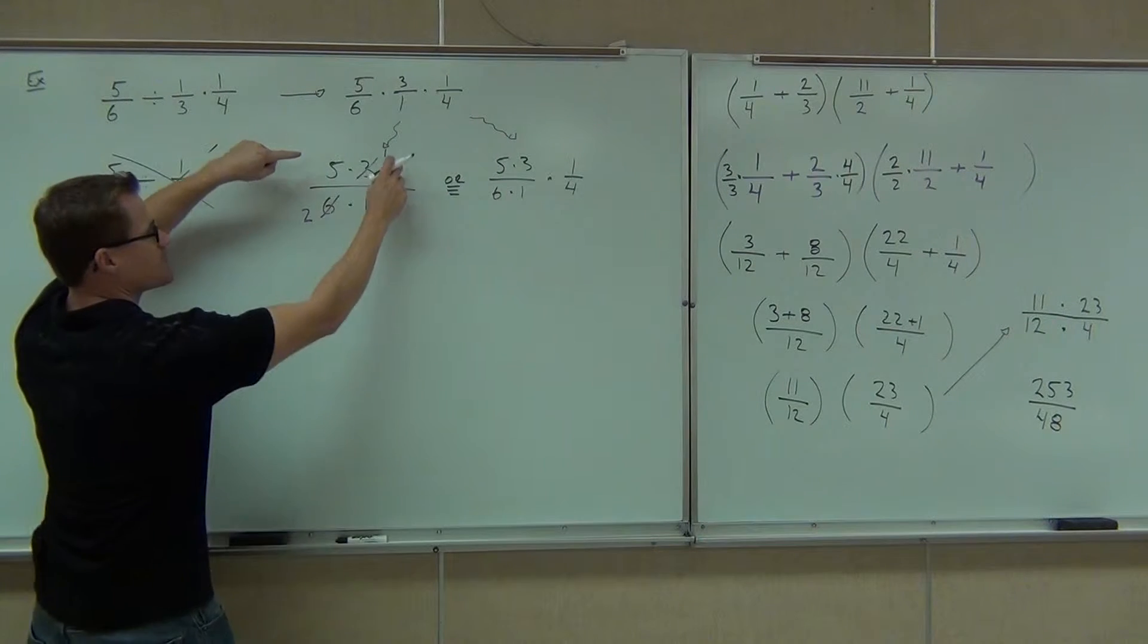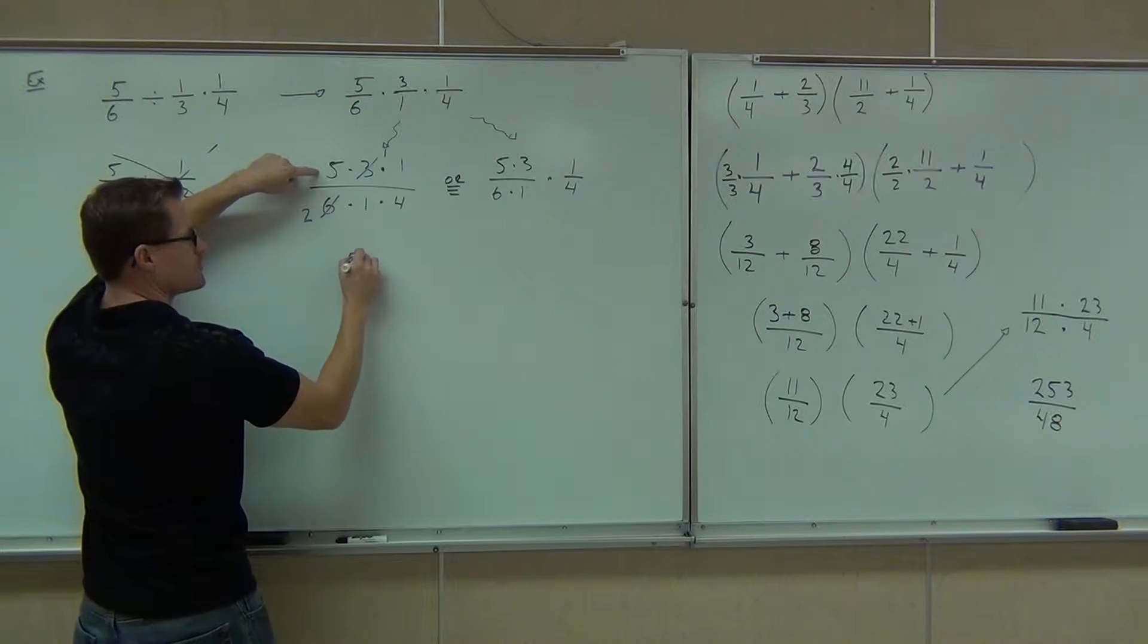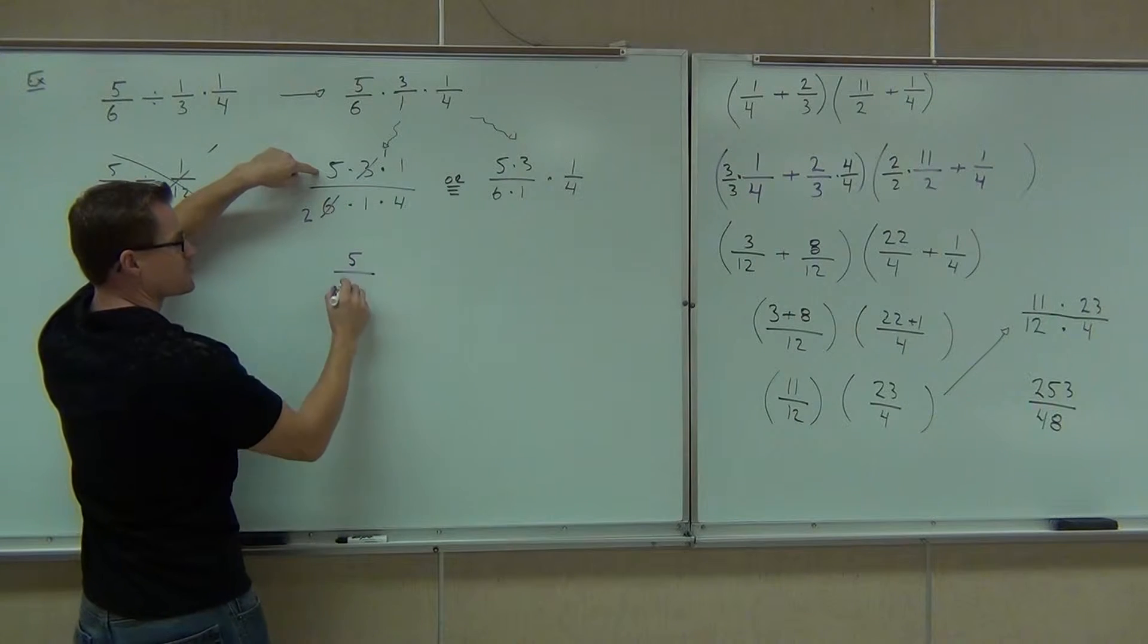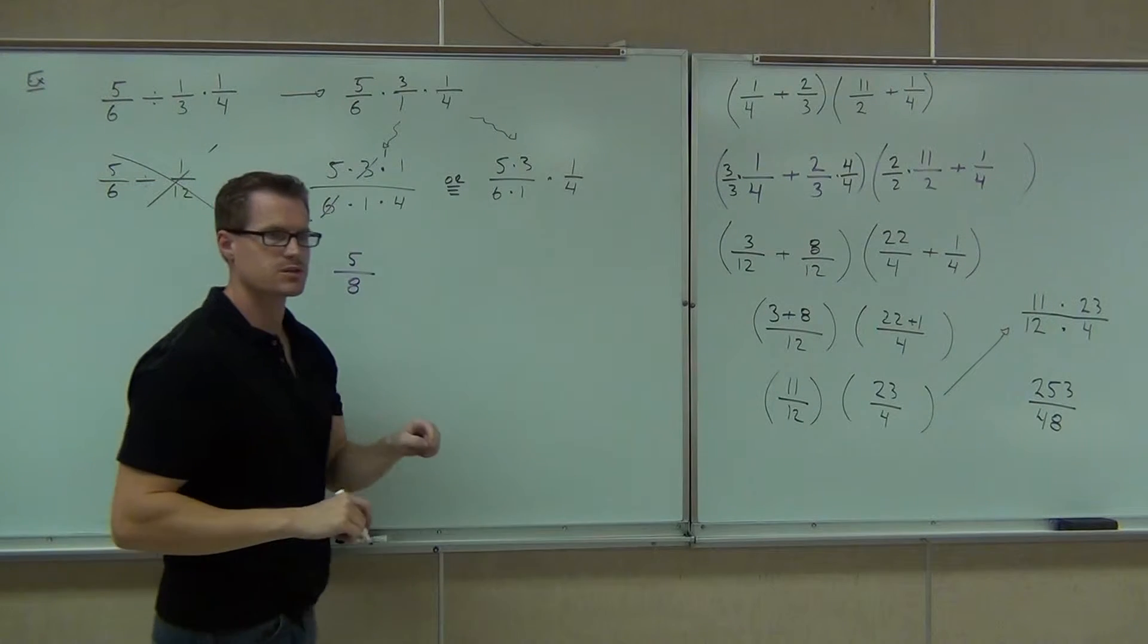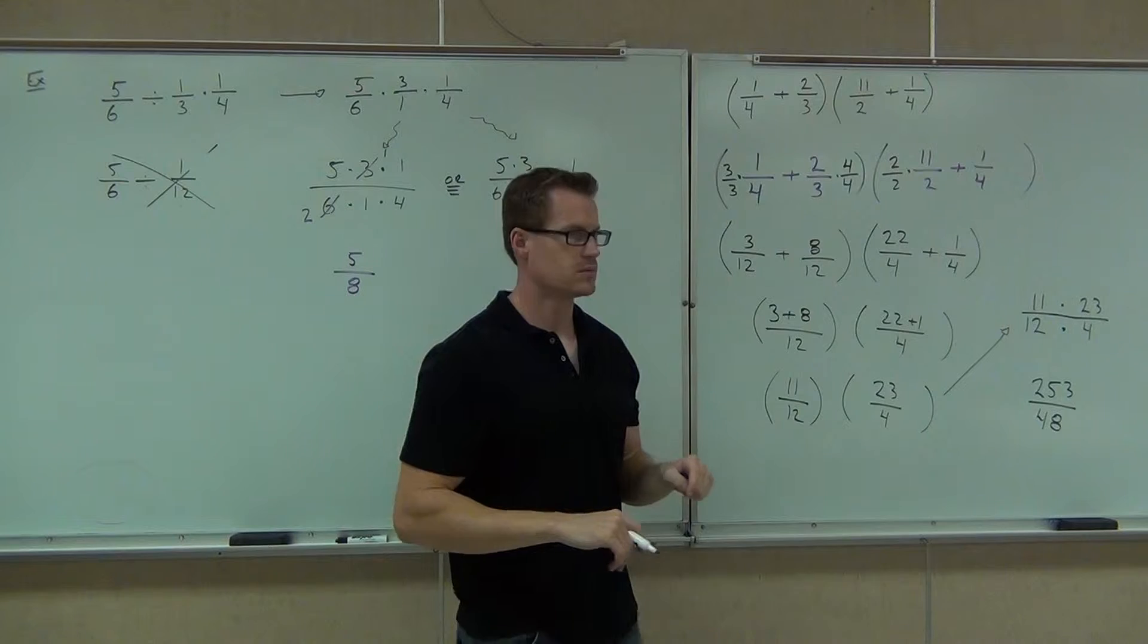This is going to be 5 times 1 times 1. This is going to be 2 times 1 times 4. You're going to get 5 eighths. That's our answer for that version of it.